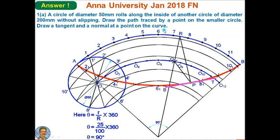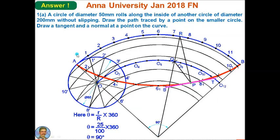To draw the tangent and normal at a point on the curve: mark point P somewhere on the curve. With P as center and 25 mm radius, cut an arc on the arc passing through the center of the small circle to get Q. Draw a line joining Q to the center of the bigger arc AB, then extend it until it cuts arc AB — mark that point R. Draw line RP, which is the normal at point P. Then draw a line perpendicular to RP using a mini-scale; that is the required tangent ST.